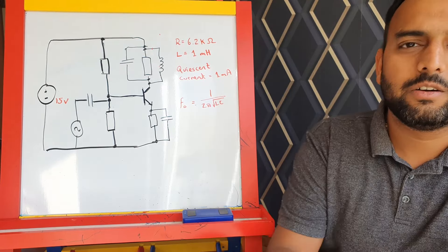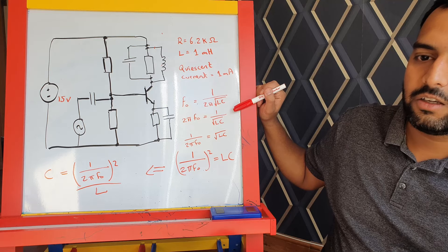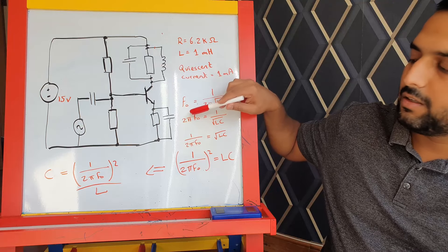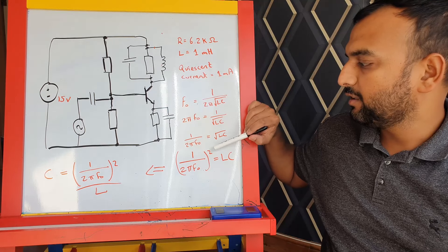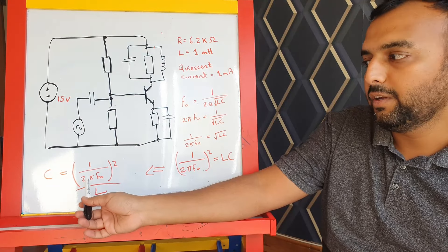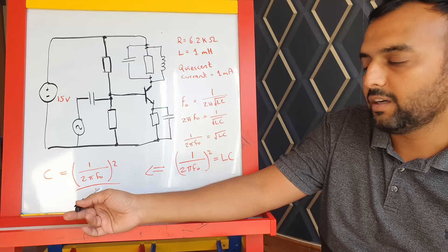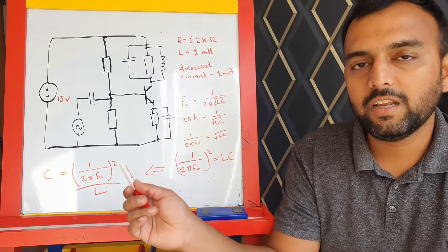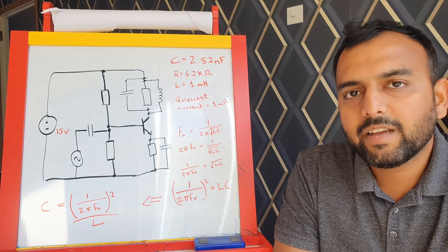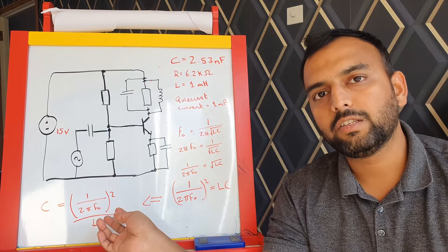Rearranging the resonance equation to isolate C: first take 2π to the other side, then invert both sides, then square both sides to remove the square root, then divide by L. This gives C = (1 / (2πF0))² / L. Plugging in F0 = 100 kilohertz and L = 0.001 henries (1 millihenry), we get a capacitance value of 2.53 nanofarads.